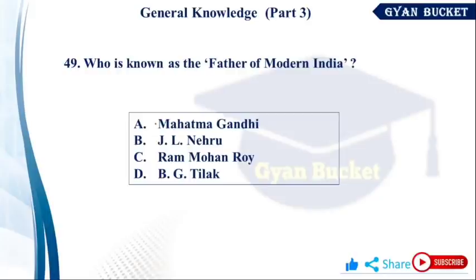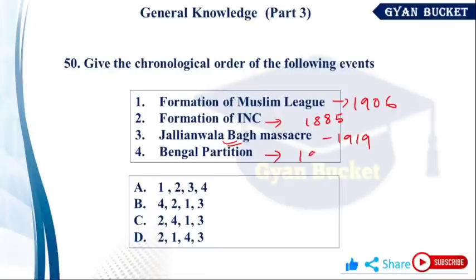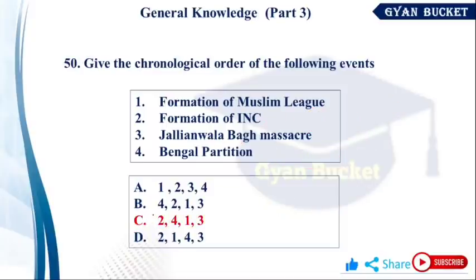Who is known as the Father of Modern India? Ram Mohan Roy — option number C. Now the last question: arrange in chronological order — INC formation 1885, Bengal Partition 1905, Muslim League formation 1906, Jallianwala Bagh massacre 1919. So the order is 1885, 1905, 1906, 1919 — that gives option number C as the answer.